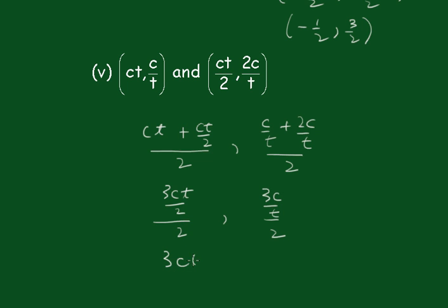Now this will become, we invert and multiply, 3ct over 4, and this one of course becomes 3c over 2t. Just be careful with these ones.